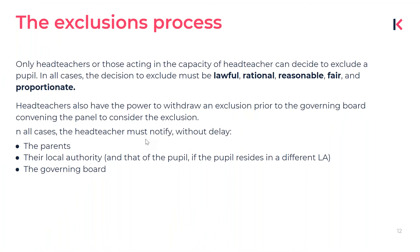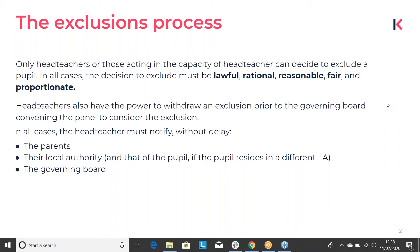Only headteachers — or those acting in the capacity of headteacher, such as an acting deputy headteacher if the headteacher isn't available — can decide to exclude a pupil. In all cases, the decision to exclude must be lawful, rational, reasonable, fair, and proportionate. Headteachers also have the power to withdraw the exclusion, assuming that the governing board hasn't convened a panel to consider that exclusion.